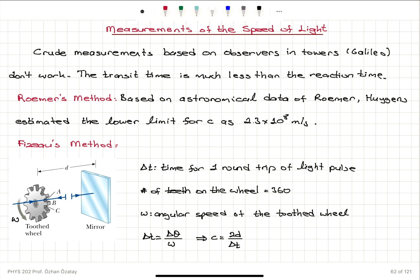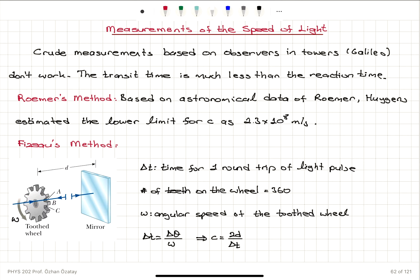Fizeau's method is a very nice way to measure the speed of light. We have a tooth wheel — called Fizeau's wheel — which has teeth with openings A, obstacle B, opening C, and so on. This tooth wheel rotates at an angular speed omega, and is placed at a large distance D from a mirror. We send light pulses through the openings; when these pulses hit the mirror, they reflect back toward the tooth wheel.